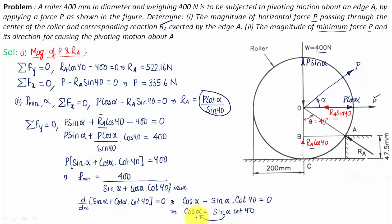If you can shift this sin alpha over to this side, it will become cos alpha over sin alpha, and cos alpha over sin alpha is cot alpha. So I can write this as cot alpha is equal to cot 40. Cot and cot cancel out, ultimately the value of alpha will work out as 40 degrees. And if you put the value of alpha equal to 40 degrees in this equation, you will get the minimum value of P which will be equal to 257 newtons approximately.